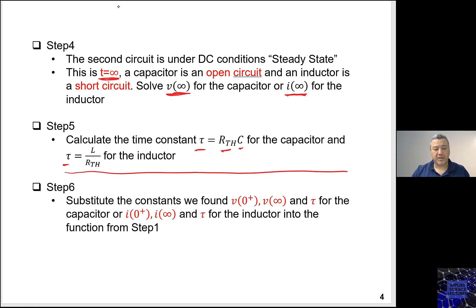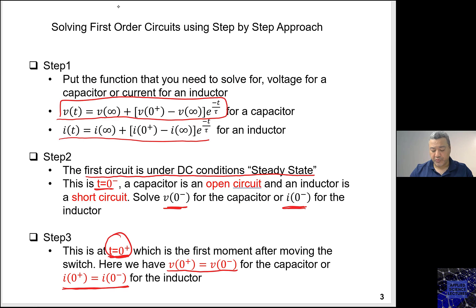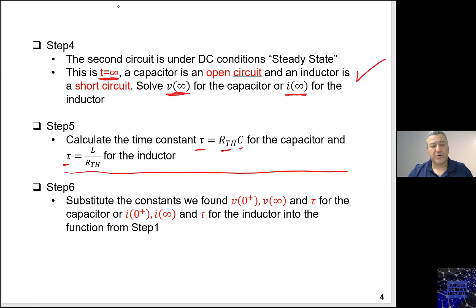For a capacitor, tau equals R_th times C. For an inductor, tau equals L over R_th. Step number six is substituting everything found into the function from step one. The main steps to work on are step two (finding voltage or current at zero minus), step three (same as zero minus), step four (voltage or current at infinity for circuit two), step five (finding R_th), and step six (substituting).